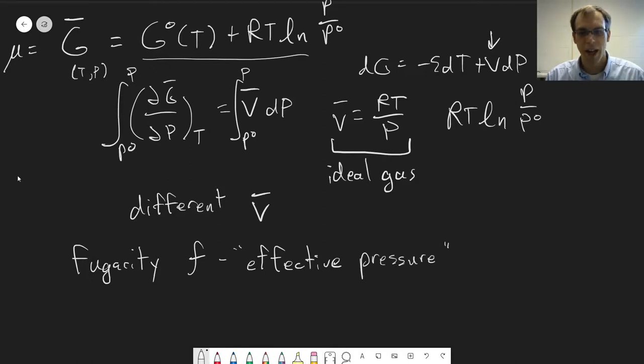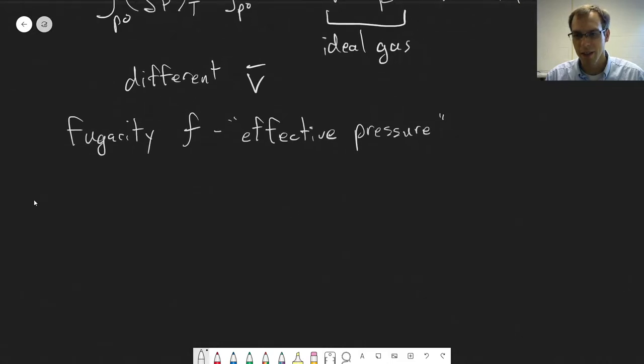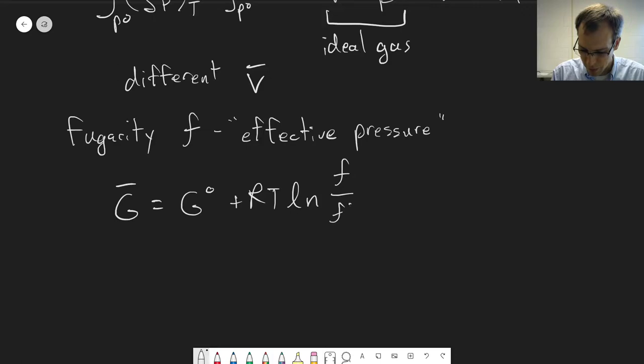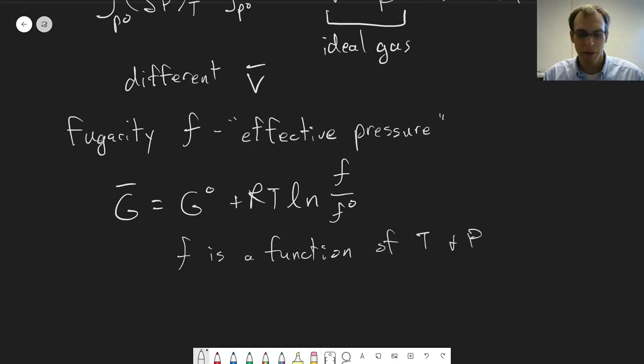And we define fugacity such that the value of the molar Gibbs energy is equal to the standard value plus RT log f over f naught. So we switch from p to f here. And again, f here is a function of temperature and pressure.